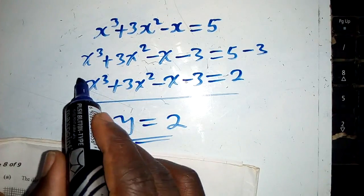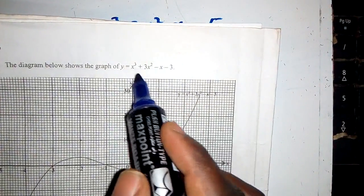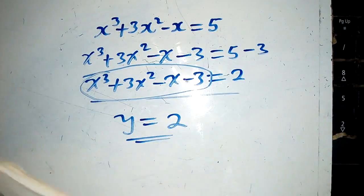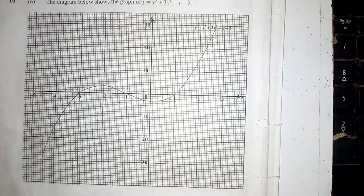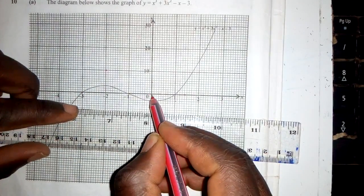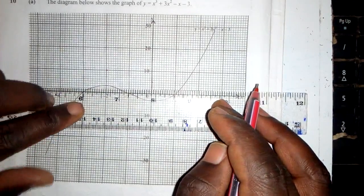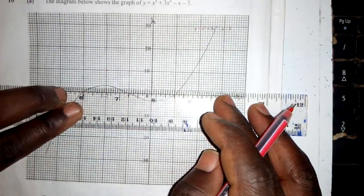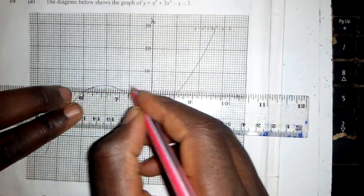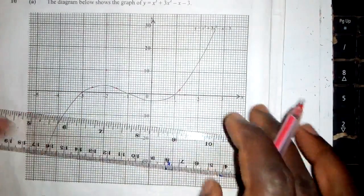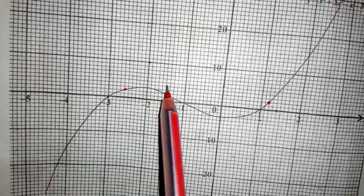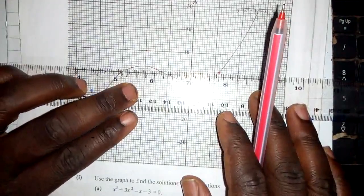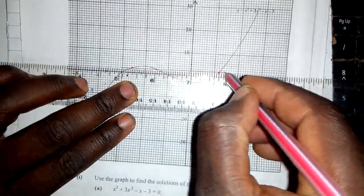We need to graph y equals 2. The stuff on the left side of the equation is the same as what's graphed, so we can say y equals 2. Our 2 is here — this is 0, 1, 2. Our 2 is somewhere here. So you put your ruler and check where the line y equals 2 intersects the curve. It's cutting here, and here, and also here.